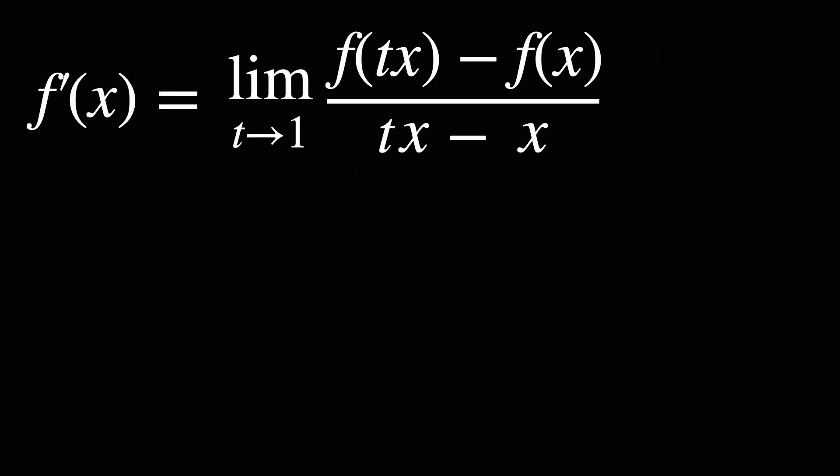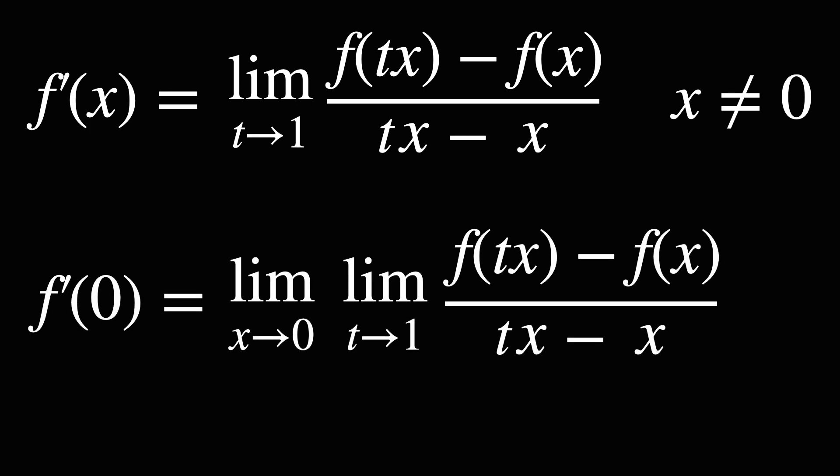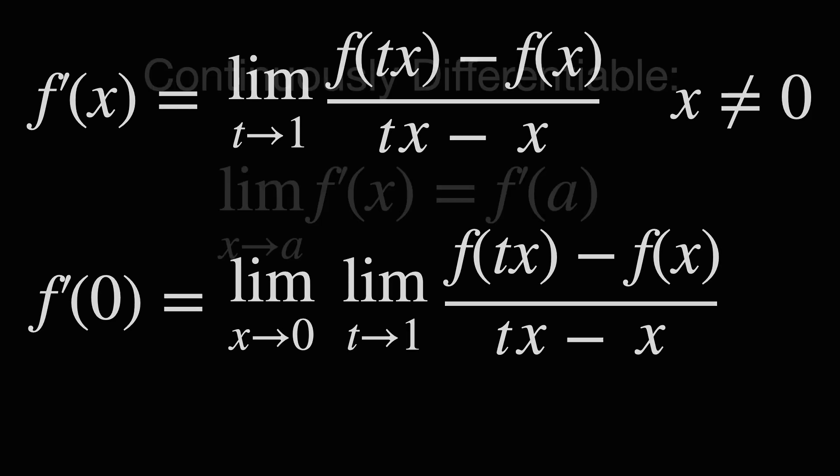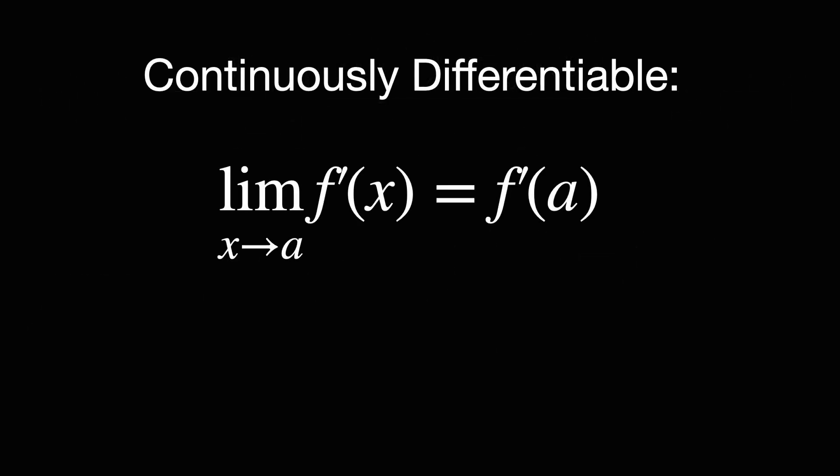Okay, now let's talk about the elephant in the denominator. Yes, this definition fails at x equals 0. My proposed fix for this was just to define f prime of 0 as the limit as x approaches 0 of f prime of x. And this works fine for functions that are continuously differentiable. Meaning, the derivative at any point is equal to the limit of the derivative as x approaches that point. For the functions we've been discussing, there's absolutely no problem.